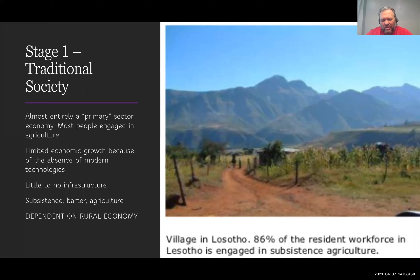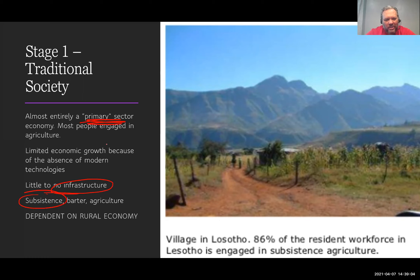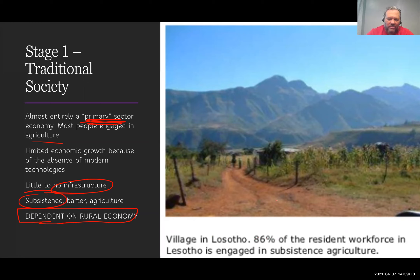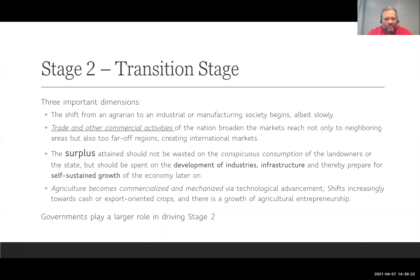Stage one is the traditional society. There is very little infrastructure, subsistence farming, and it is mostly the primary sector. People are engaged in agriculture and dependent on a rural economy. An example would be a village in Lesotho, where 86% of the resident workforce were in subsistence agriculture — that would be a stage one country for Rostow.